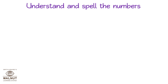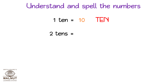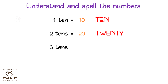Understand and spell the numbers. One ten is equal to ten — T-E-N — 10. Two tens is equal to twenty — T-W-E-N-T-Y — 20. Three tens is equal to thirty — T-H-I-R-T-Y — 30.